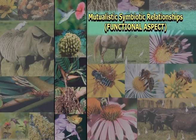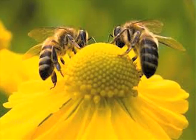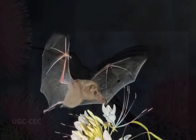Let us now have a detailed overview of various types of mutualistic symbiotic relationships categorized on the basis of functional aspect. Starting with pollination symbiosis: pollination mutualism between flowering plants and animals such as insects like bees, moths, butterflies, and birds as well as bats is one of the most common forms of mutualism. They derive food from nectar, pollen, or other plant products, and in return, bring about cross-pollination. Various structural adaptations have occurred in both plants and animals, leading to co-evolution.